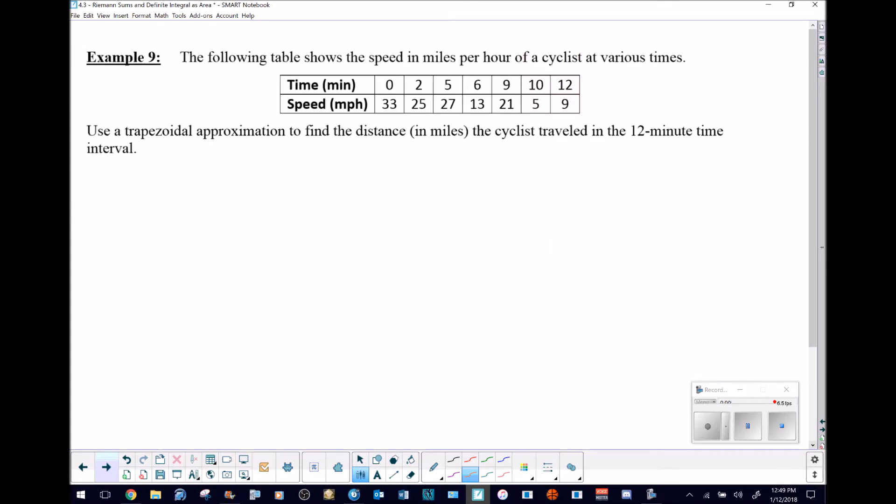If we read through the problem, it says the following table shows the speed in miles per hour of a cyclist at various times. Use a trapezoidal approximation to find the distance in miles that the cyclist travels in the 12-minute time interval.